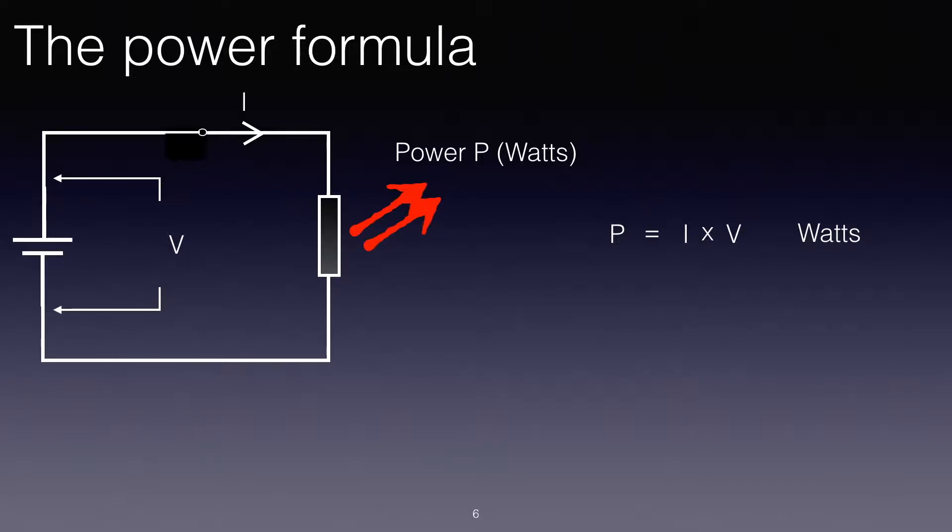Now just like the Ohm's Law equations or the Ohm's Law formula, we can also re-express the same formula in another two ways. I equals P over V will give us the current in terms of the power and the voltage, and V, the voltage, equals P over I. So if we know any two of these, we can find out the third.